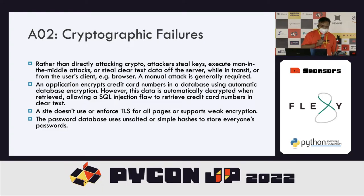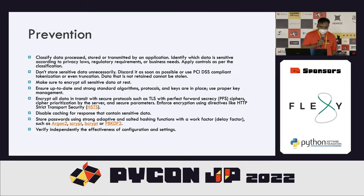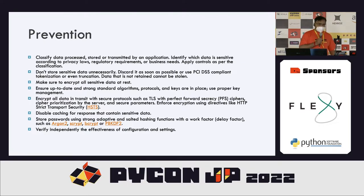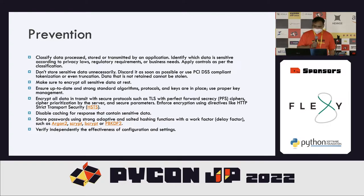Another reason for cryptographic failure is a site that doesn't use or enforce TLS for all pages, or a password database that uses unsalted or simple hashes to store passwords. For prevention, classify the data processed, stored, or transmitted by an application and identify which data is sensitive according to privacy laws, regulatory requirements, or business needs. Note that law or government may not yet recognize the most advanced algorithm — you need to use cryptographic and hashing algorithms recognized by your government, or there may be problems in claiming compensation.